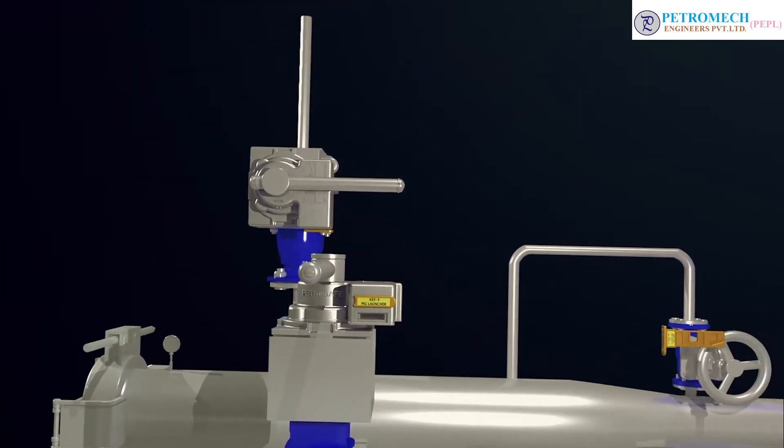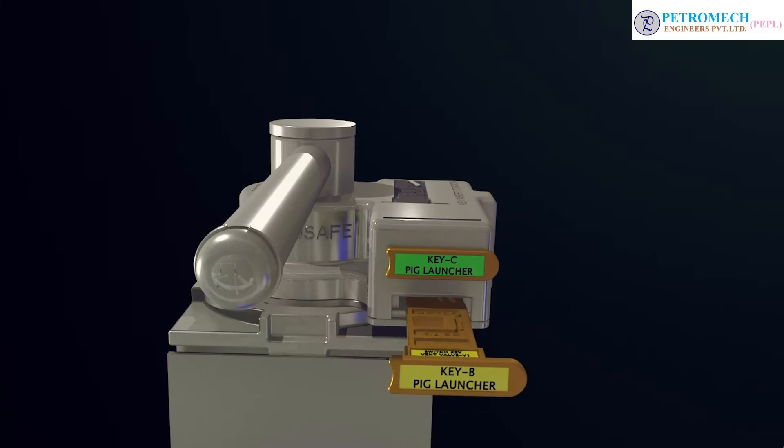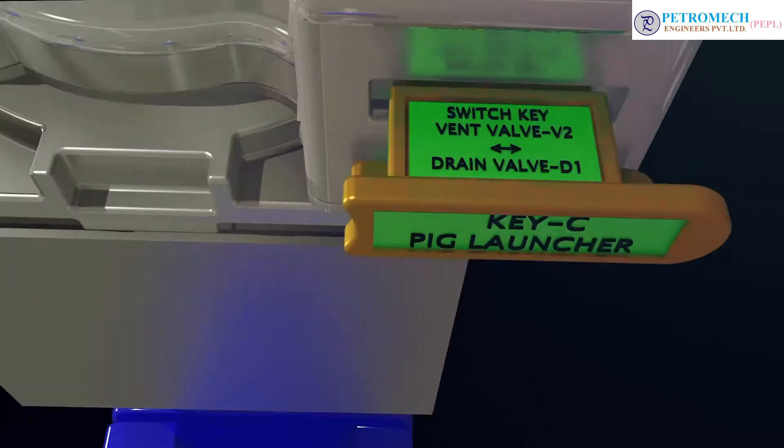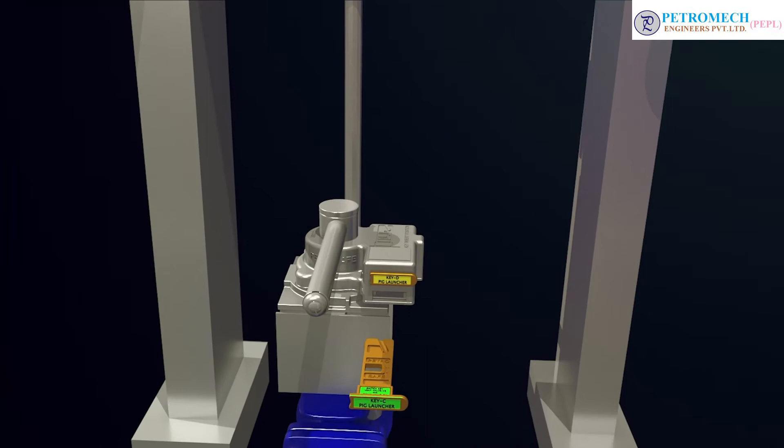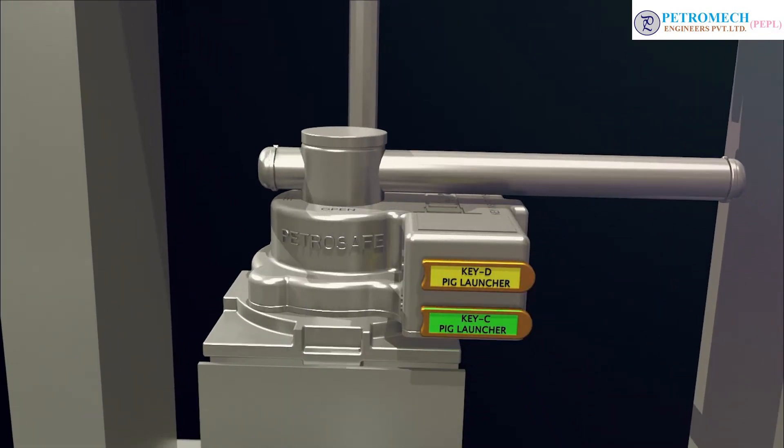Step 3: Insert key B into vent valve V2. Open the valve and release key C. Step 4: Insert key C into drain valve D1. Open the valve and release key D.